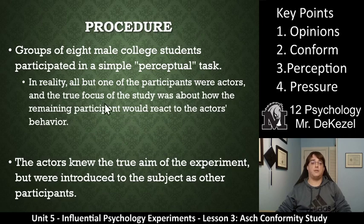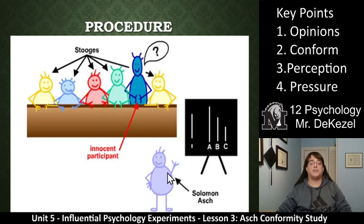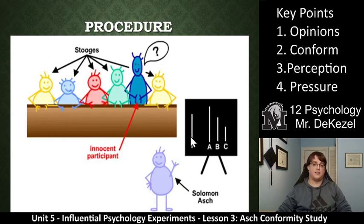So you can see key point three is perception — we have a perceptual task here, just trying to determine what does it look like to you. Is this line longer than this line? That essentially was the question. So the idea is that we would see what effect the group would have on the subject — what would they say? So here's a fun little picture. We've got the Stooges — these are the actors, this is the guy that we're studying, and this is Asch. He would be like the guy at the front.